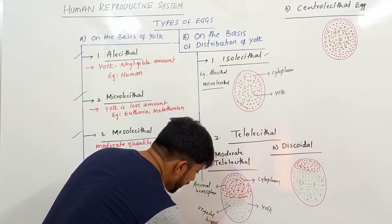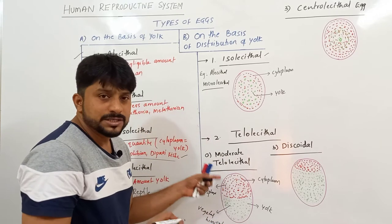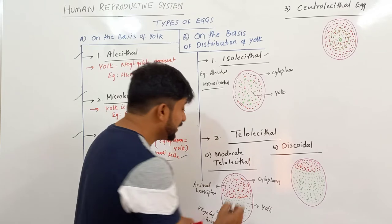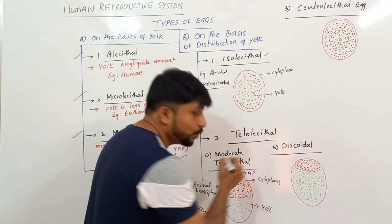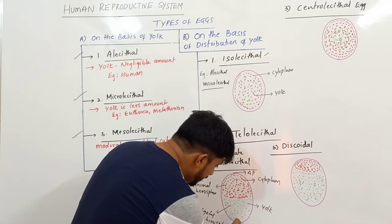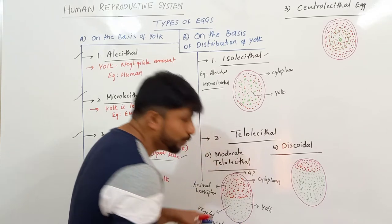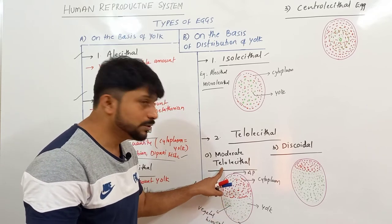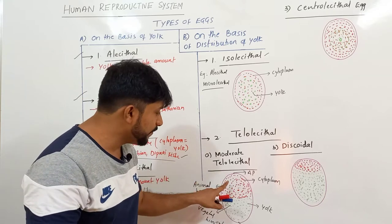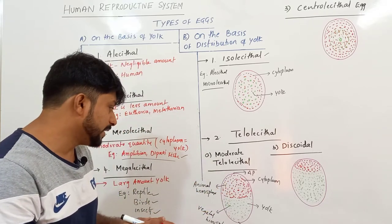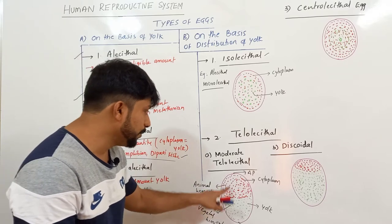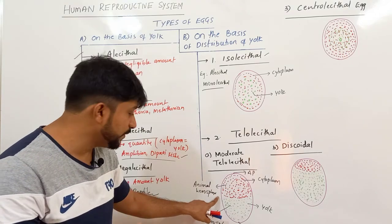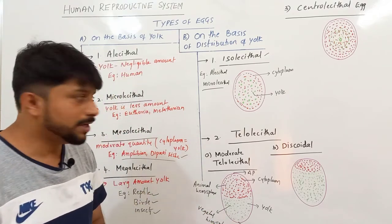This animal and vegetal hemisphere — if you consider the egg as spherical, on the top of the animal hemisphere is the animal pole, and at the opposite end is the vegetal pole. These terms are important when you study cleavages. In moderate Telolecithal, yolk and cytoplasm are distributed at different portions — where cytoplasm is present becomes the animal hemisphere, and where yolk is present, that's the vegetal hemisphere.